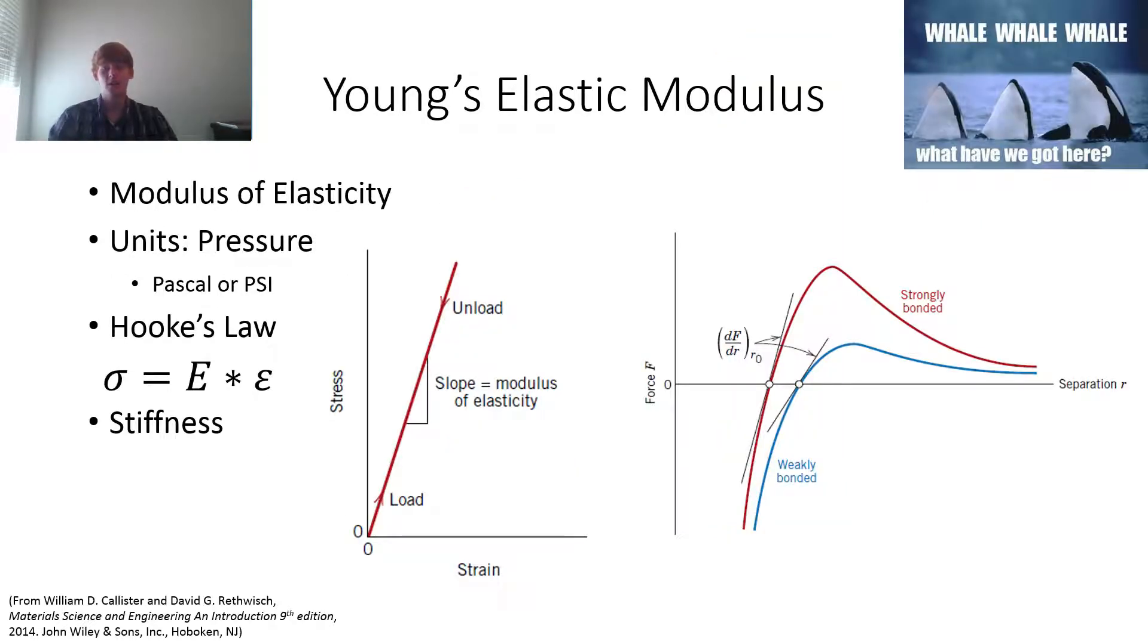So Young's elastic modulus. Young's elastic modulus, or the modulus of elasticity is, in short, how strongly bonded atoms are to each other. So if it's a covalent bond, which are very strong, it's a very stiff or a very large number for Young's elastic modulus. Whereas if it's very weakly bonded, like metallic bonding, it's less steep, it's a smaller number. This is in pressure.